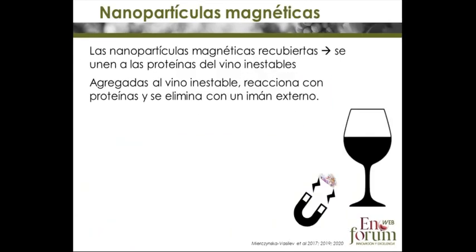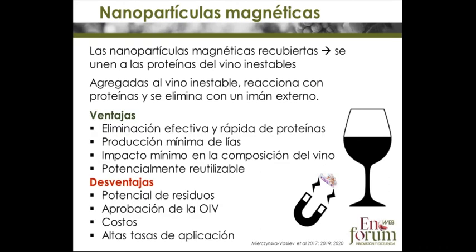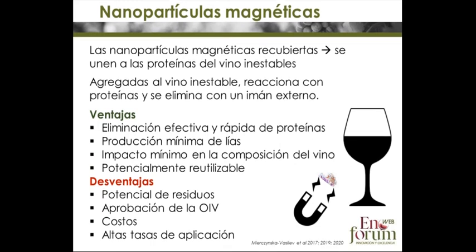An interesting recent addition is magnetic nanoparticles — particles functionalized with groups that can bind proteins. When added to an unstable wine, the proteins are removed, and being magnetic, the particles can then be removed with a magnet along with the bound proteins. It works quickly with minimal lees production and minimal impact on wine composition. Potentially these particles can be washed and reused. Disadvantages include potential residues, prohibition by the OIV, unknown costs, and the need for large amounts.